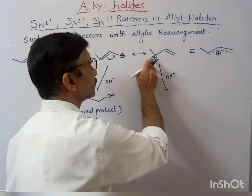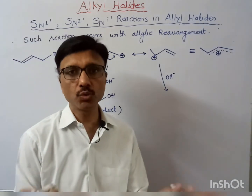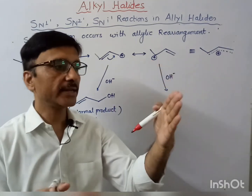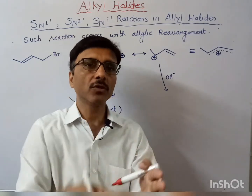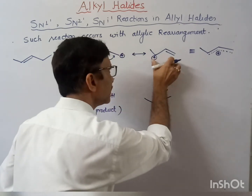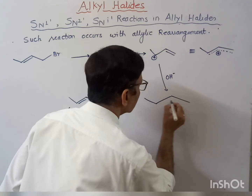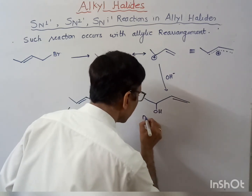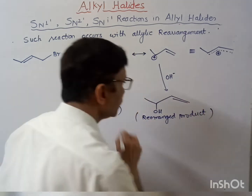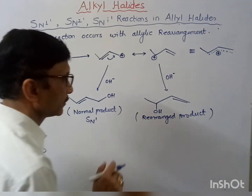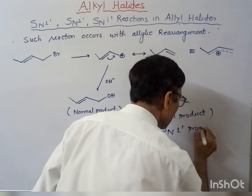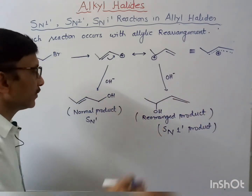If the same nucleophile attacks the rearranged carbocation, it will again attack from both sides giving inversion and retention products, because this is a planar species. The product obtained here will be the rearranged product, because this is a rearranged carbocation. The path we write for this rearranged product is the SN1' path — this is the SN1' product. So the normal product is the SN1 product and the rearranged product is the SN1' product.